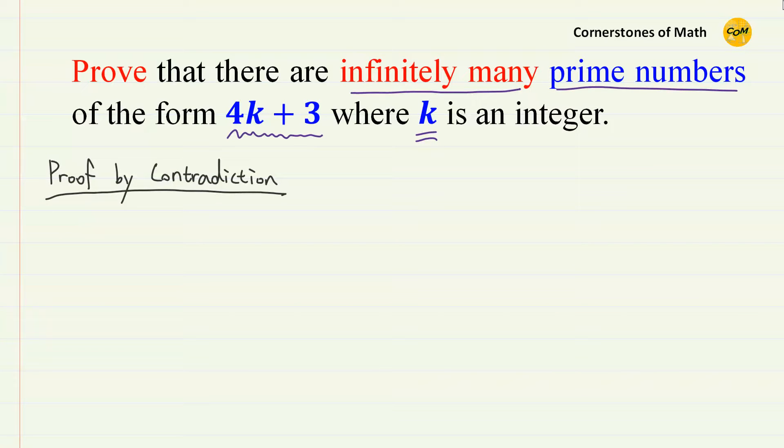We will use the famous proof by contradiction. The first step of this method is quite obvious. Assume that there are finite number of prime numbers of the form 4k plus 3. They are 3, 7,